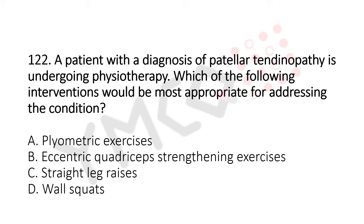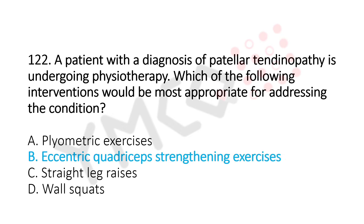Which of the following interventions would be the most appropriate for addressing the condition? Option A: plyometric exercises. Option B: eccentric quadriceps strengthening exercises. Option C: straight leg raise. Option D: wall squat. The answer is option B: eccentric quadriceps strengthening exercises.